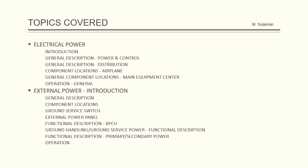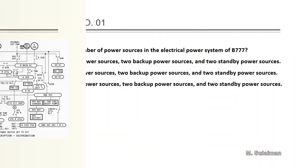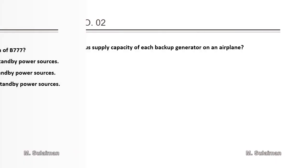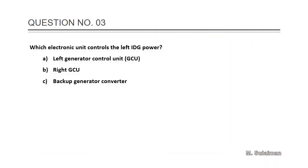These are the topics covered and the schematics. Question number one: What is the total number of power sources in the electrical power system of Boeing 777? The answer is A: five main power sources, two backup power sources, and two standby power sources. Question number two: What is the continuous supply capacity of each backup generator on an airplane? The answer is B: 20 kVA.